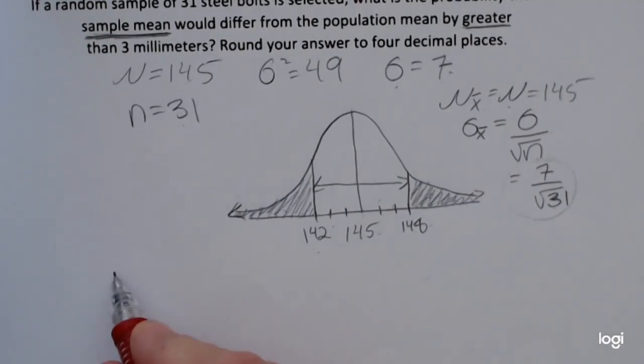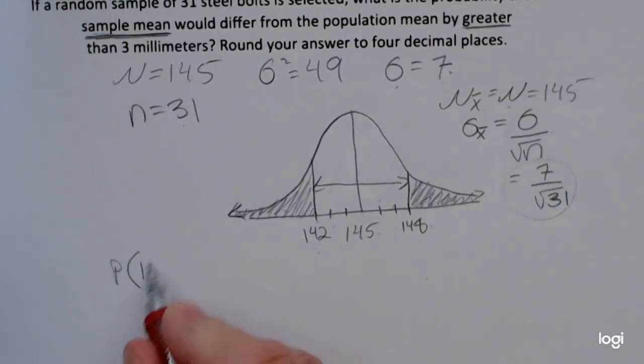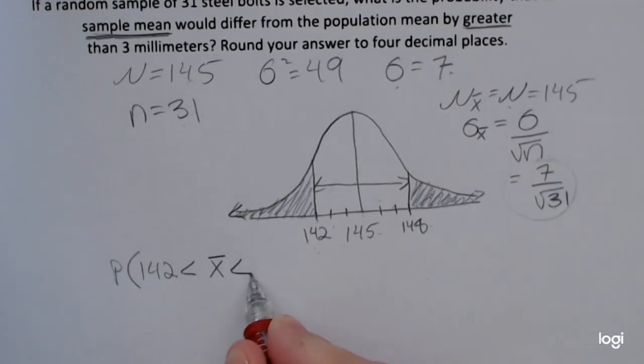So in notation, I'm going to find first this unshaded area, and that's going to be the probability that the sample mean is in-between 142 and 148.